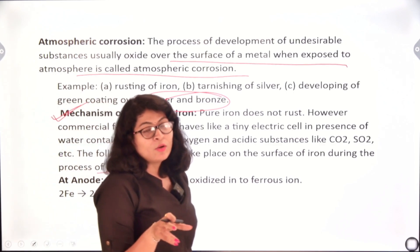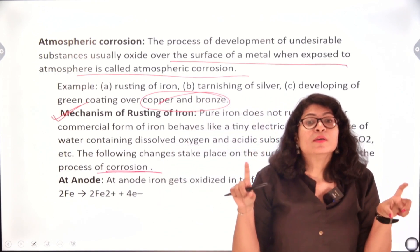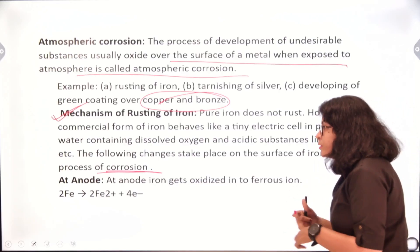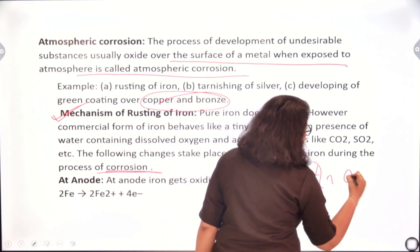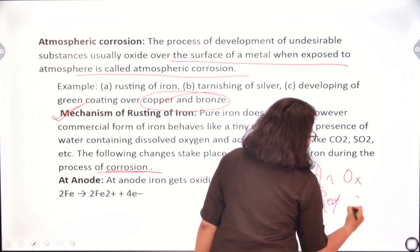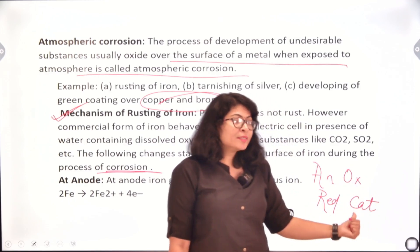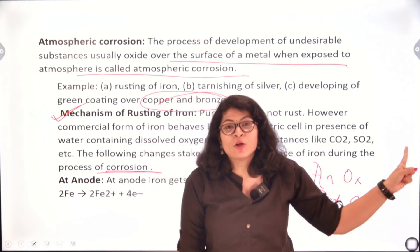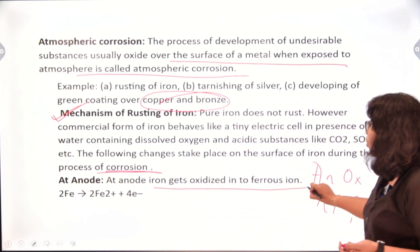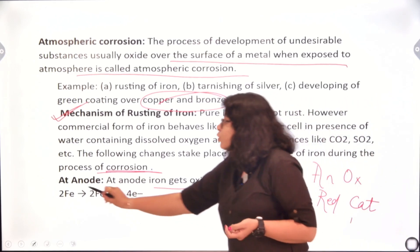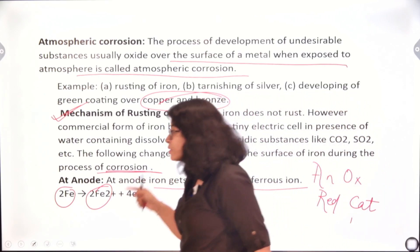In an electrochemical or electrolytic cell there are two sides: the anode and the cathode. A helpful mnemonic is 'an ox, red cat' — at the anode, oxidation always takes place; at the cathode, reduction always takes place. Oxidation is loss of electrons; reduction is gain of electrons. At the anode, iron gets oxidized to form ferrous iron — that means iron loses two electrons to form ferrous ions (Fe²⁺). This is the anodic reaction.